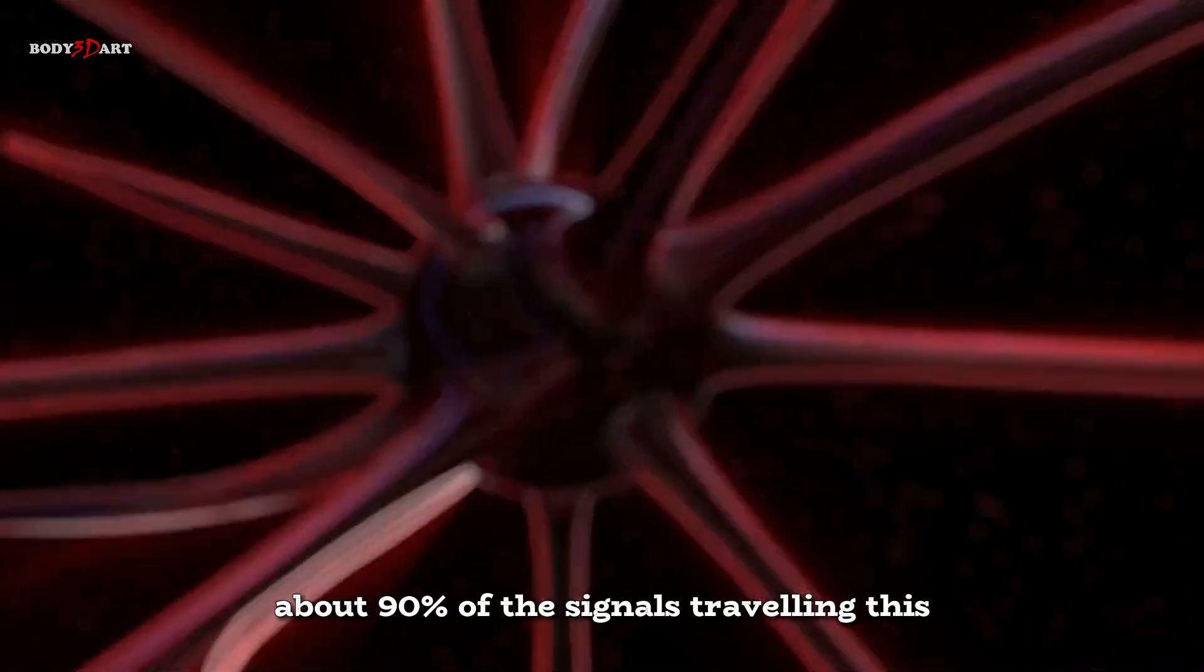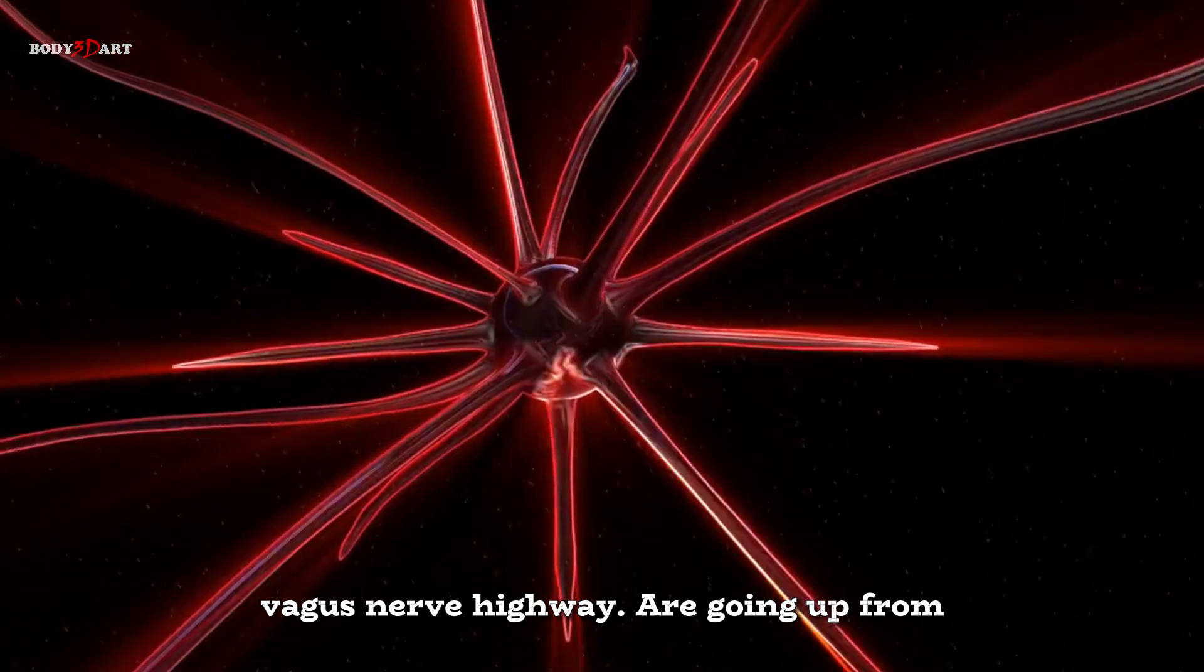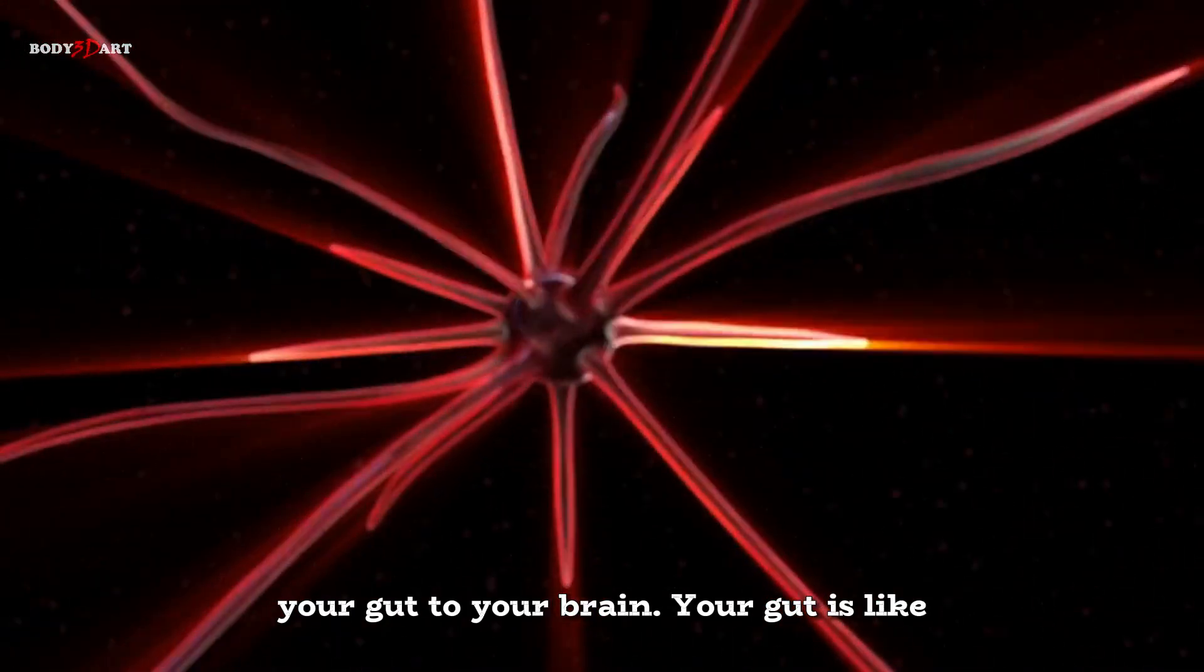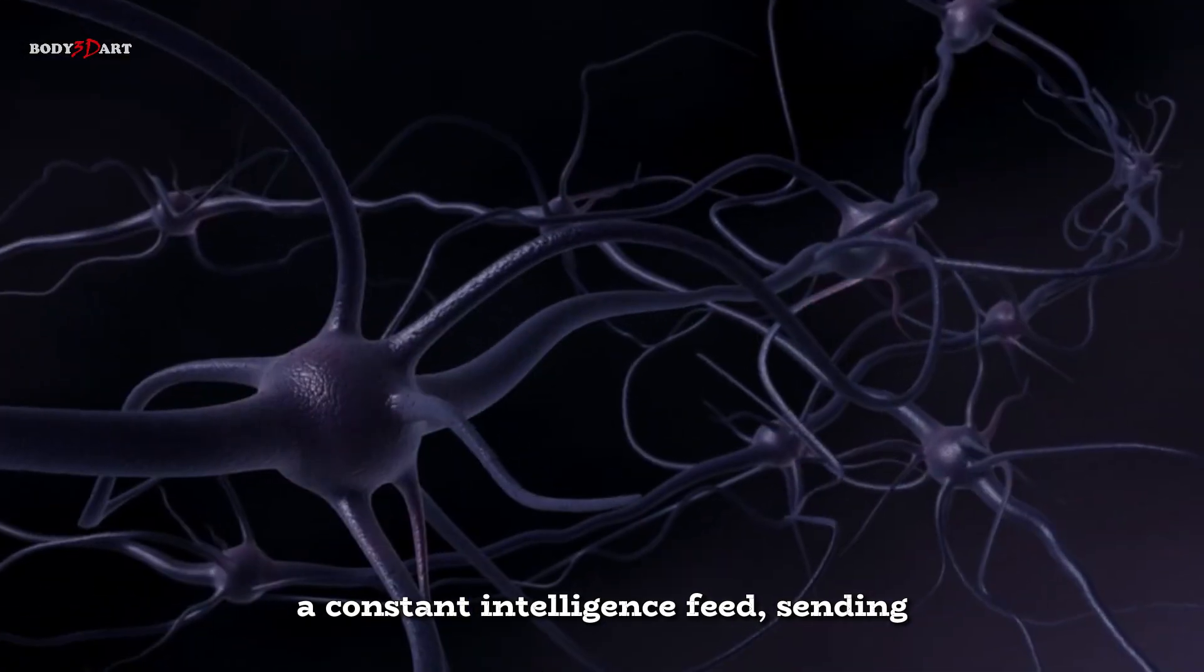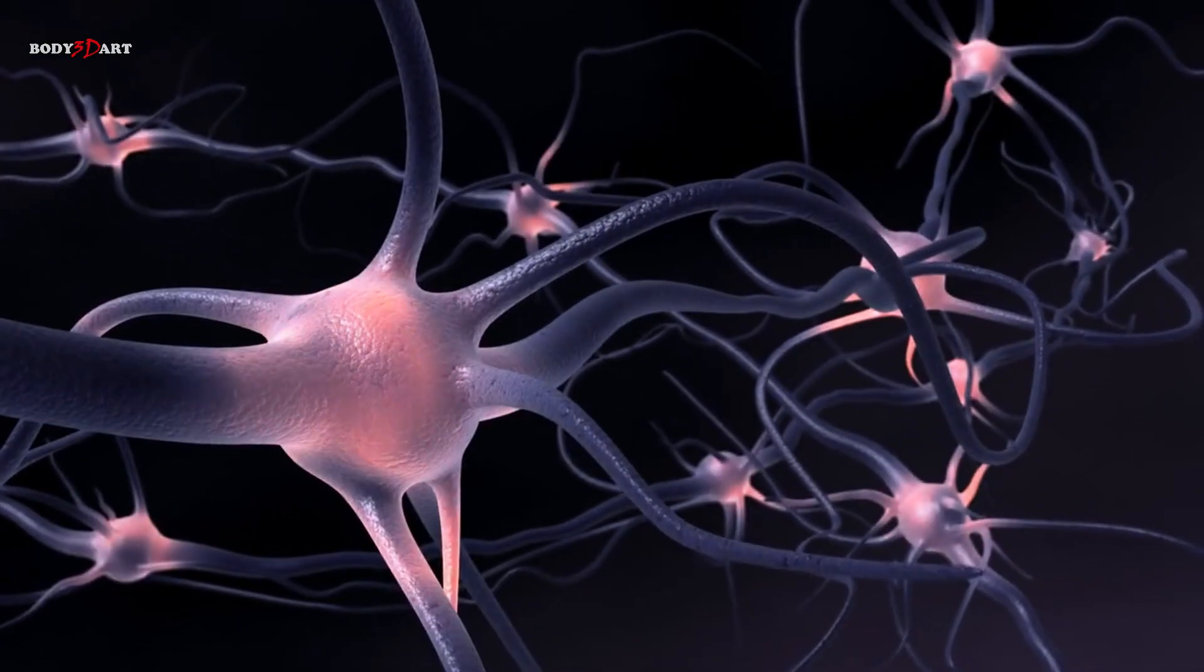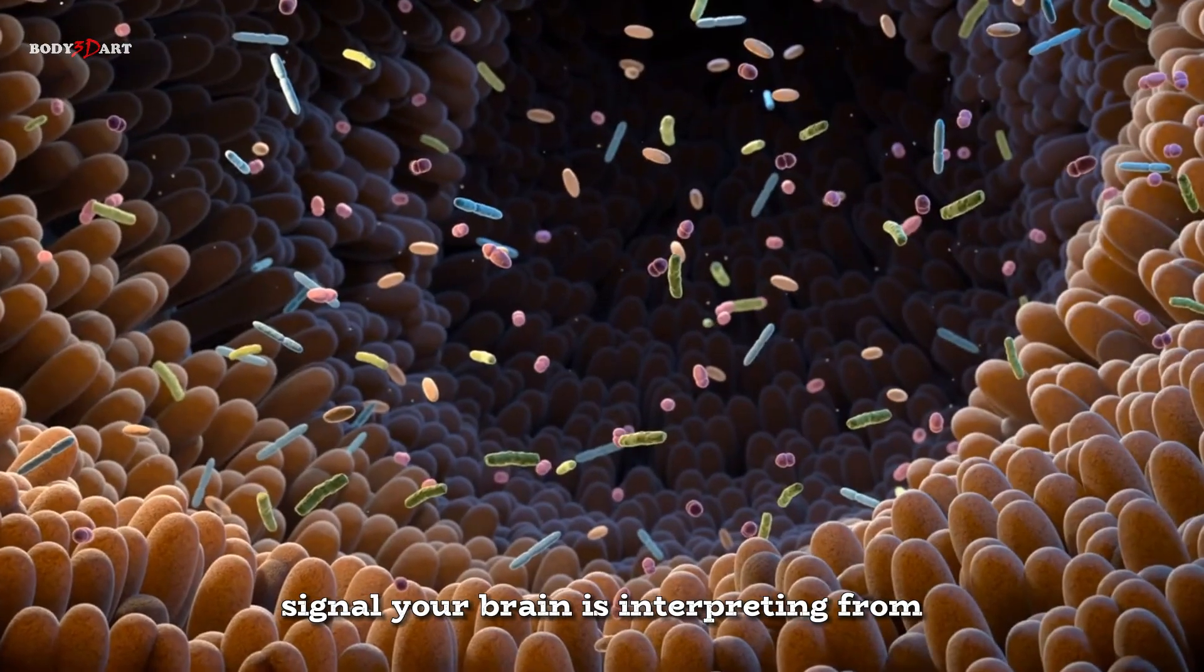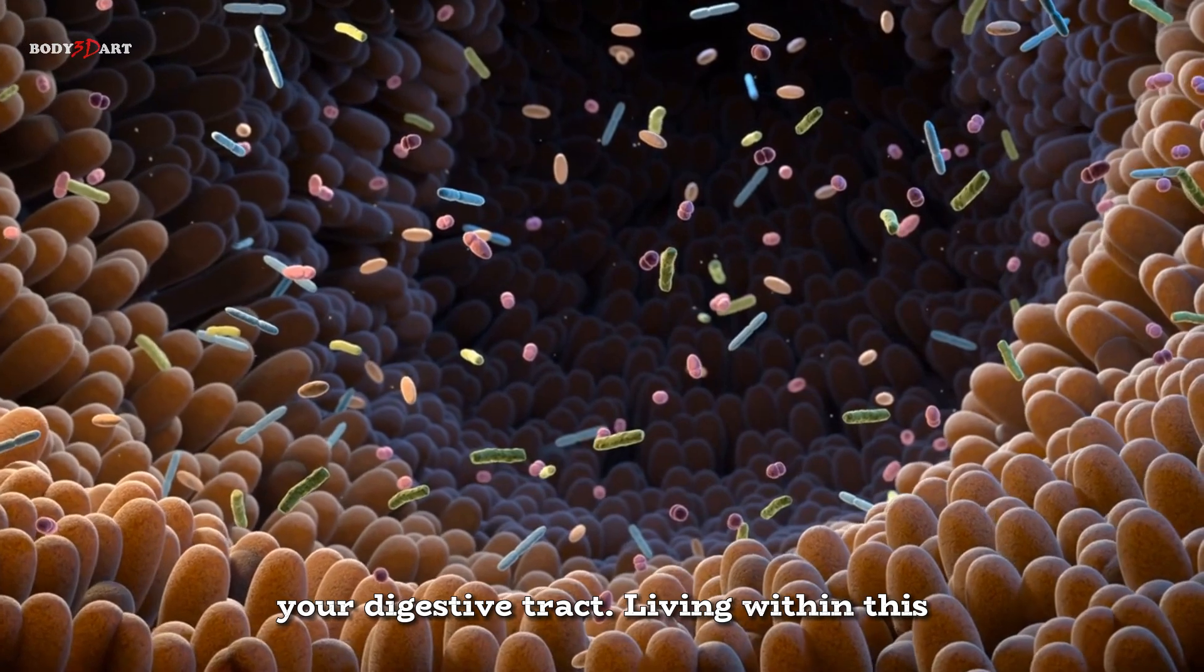And get this: about 90% of the signals traveling this vagus nerve highway are going up from your gut to your brain. Your gut is like a constant intelligence feed, sending crucial data up to headquarters. That gut feeling? It's often a literal signal your brain is interpreting from your digestive tract.